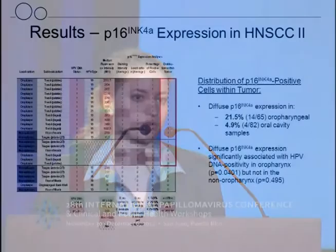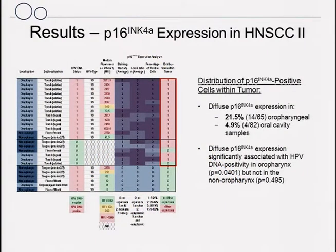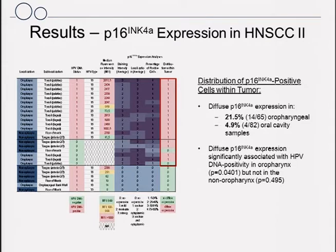We then assessed the distribution of P16 overexpressing cells within the tumor. A diffuse P16 expression — defined as at least 10% of tumor cells showing a clonal P16 pattern — was detected in 21.5% of oropharyngeal and around 5% of oral cavity samples. This diffuse P16 expression pattern was significantly associated with HPV DNA positivity in the oropharynx; however, the same correlation was not seen in the non-oropharynx.